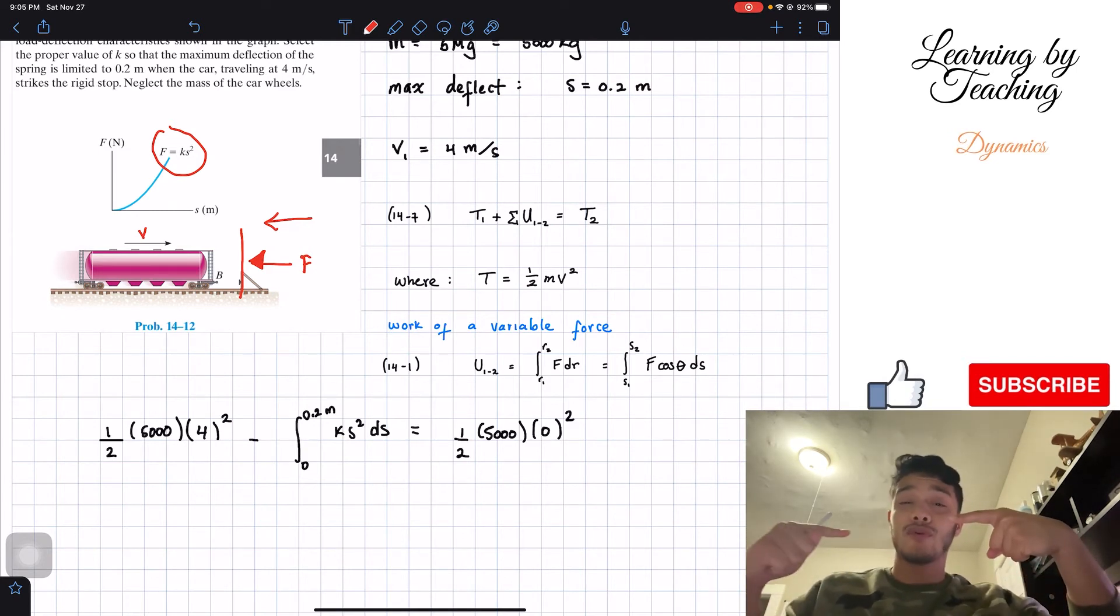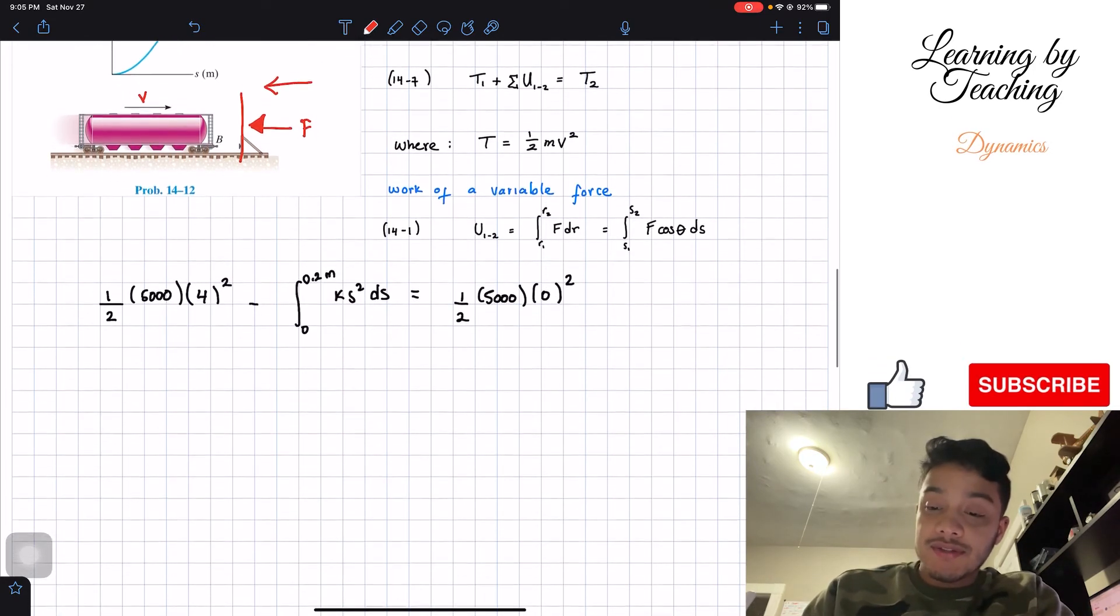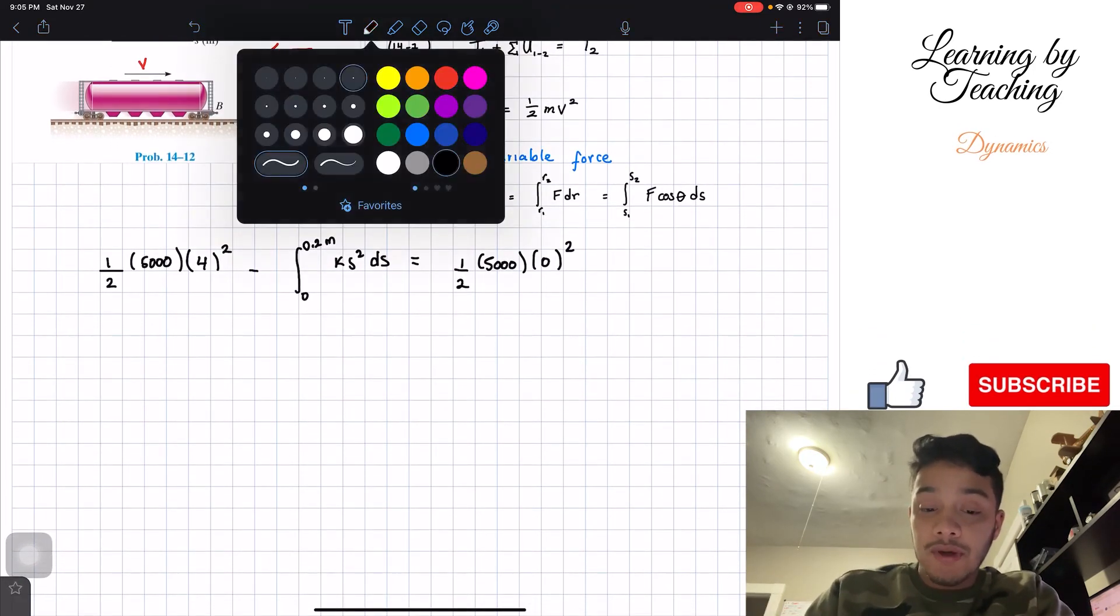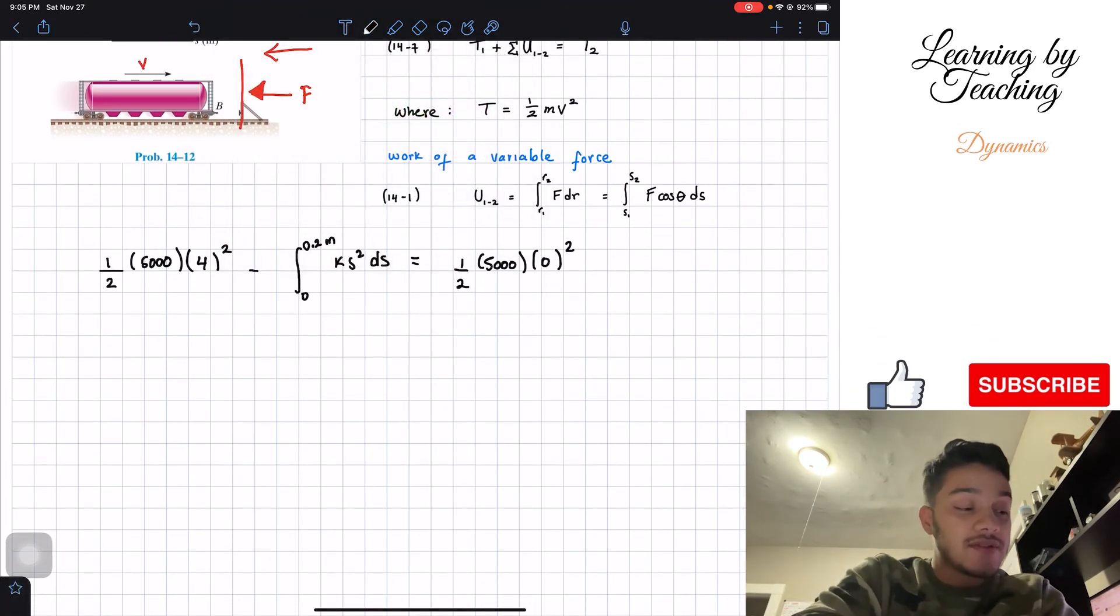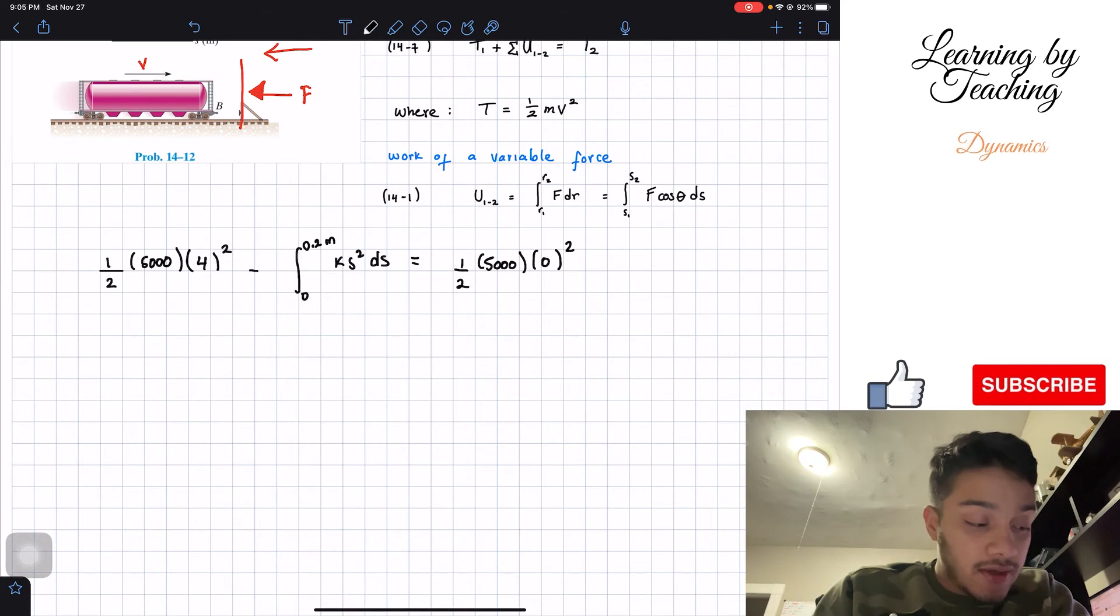Therefore since my velocity is to the right but my force is going to the left trying to push hard towards the left in order to stop this, that means that our sign for our work is negative. So now that we have that over with, let's start simplifying this equation.